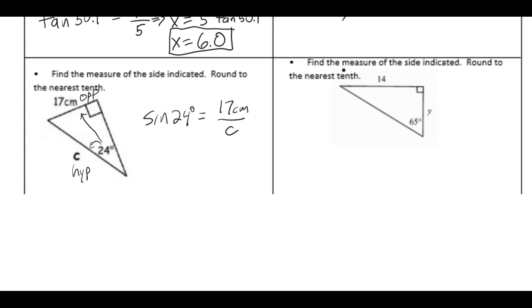Sine of 24 degrees would be 17 centimeters over c. If I multiply both sides by c, I can clear the fraction.